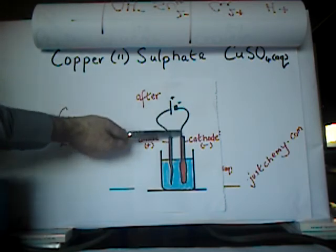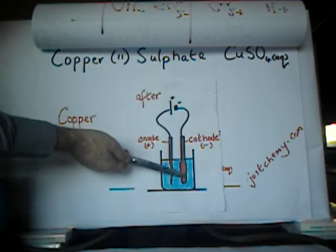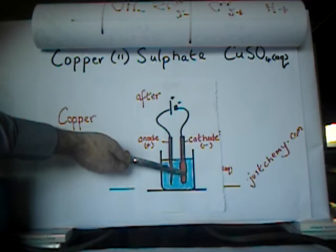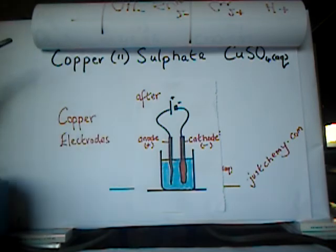The electrons move through the circuit, build up on the cathode. Copper ions are attracted in here, accept electrons. They are reduced, forming copper atoms, which are insoluble. So they deposit on top of the cathode, and the cathode gets bigger.